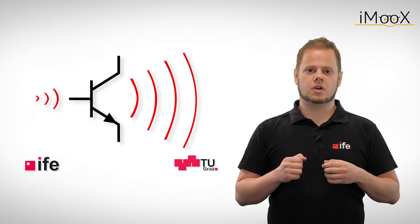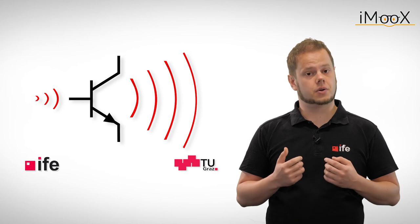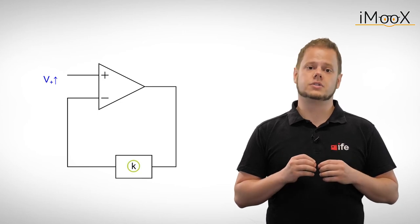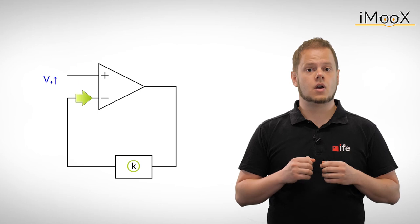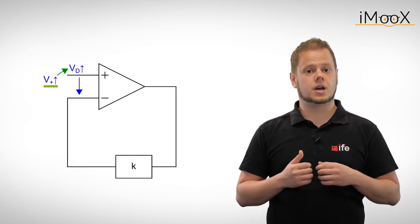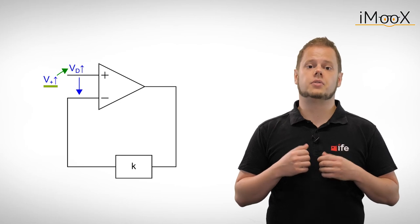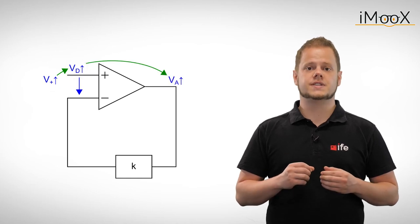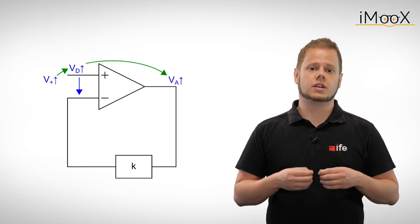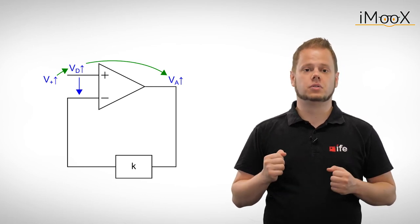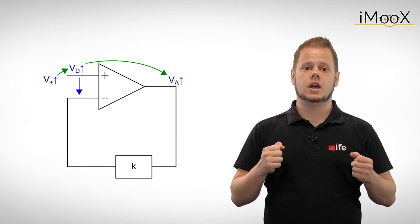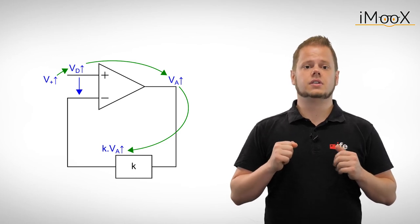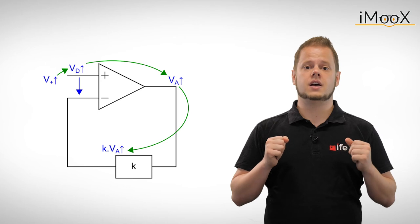Now we will apply these properties to a very common operational amplifier configuration, the negative feedback. Negative feedback means that a portion K of the output signal is applied to the inverting input. For the circuit shown, a positive voltage applied to the non-inverting input causes the differential input voltage VD to rise. The output voltage VA increases with increasing VD due to the differential gain of the amplifier. Along with the output voltage VA, the output of the feedback network K times VA rises. As the output of the feedback network is connected to the inverting input of the operational amplifier, V- increases.